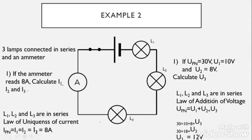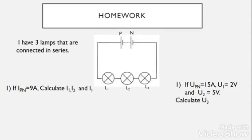L1, L2, and L3 are in series, so we apply the law of addition of voltage: UPN equals U1 plus U2 plus U3. Therefore 30 equals 10 plus 8 plus U3; since 10 plus 8 equals 18, U3 equals 12 volts. Now let's move to the homework — three lamps connected in series — it's very easy, so please solve it and send it back to me.